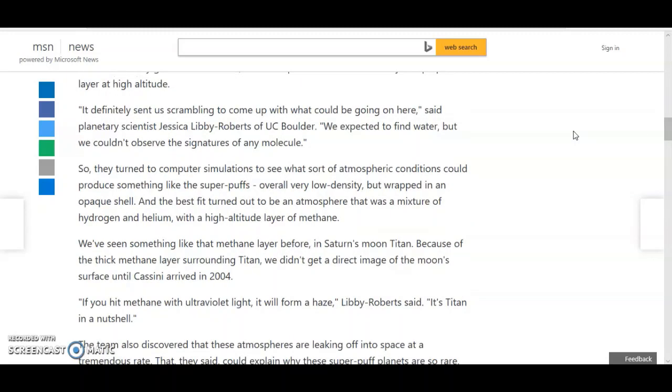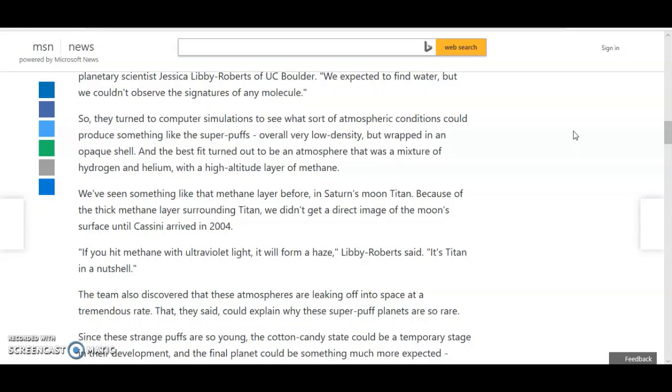We've seen something like that methane layer before in Saturn's moon Titan. Because of the thick methane layers surrounding Titan, we didn't get a direct image of the moon's surface until Cassini arrived in 2004. More bullshit. If you hit methane with ultraviolet light, it will form a haze, Libby-Roberts said. It's Titan in a nutshell.